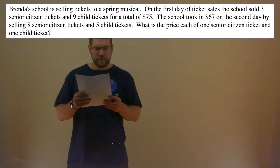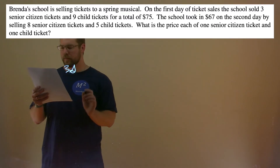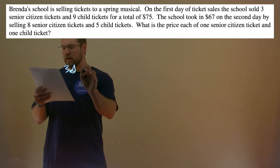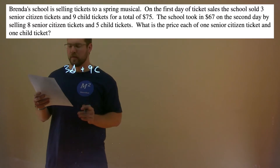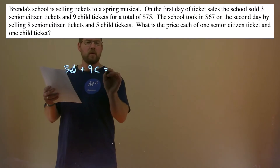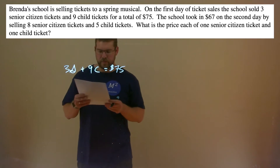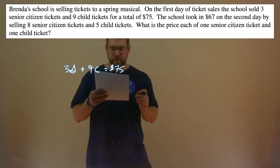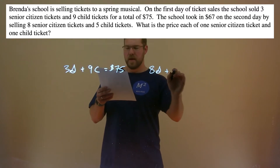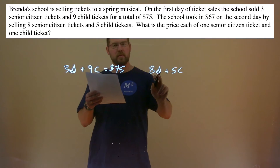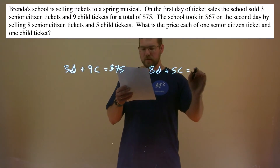So let's look at the first day. They told us that three senior citizen tickets — so 3S, S being the price of a senior citizen ticket — and nine child tickets, so we add them together, C being the price of a child ticket. We added them together and got a total of $75. On the second day, they sold eight senior citizen tickets and five child tickets, S being the price of a senior citizen ticket, C being the price of a child ticket, and that's equal to $67.